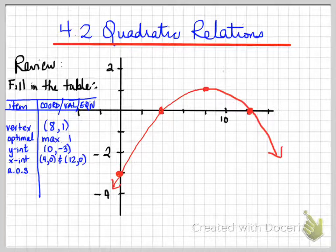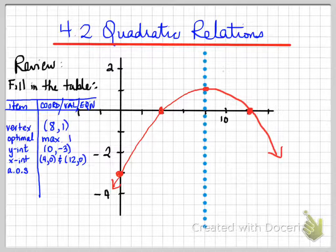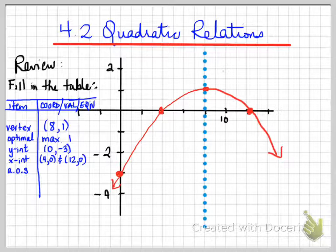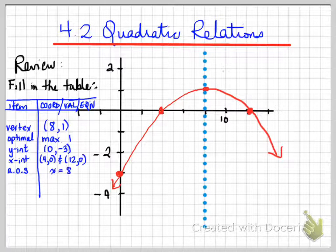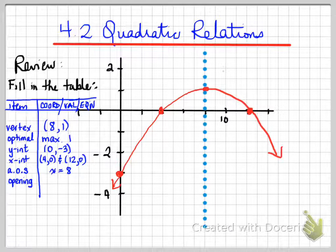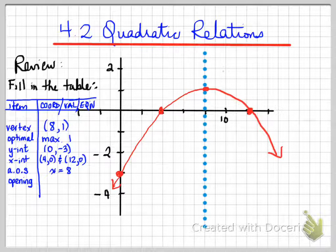Our AOS, which stands for axis of symmetry — where is it located? You should be imagining a vertical dotted line that crosses through the vertex. That dotted line is the axis of symmetry. The axis of symmetry is an equation: x = 8. As for the opening — look at the arrows. The arrows are pointing down, so this graph opens down.